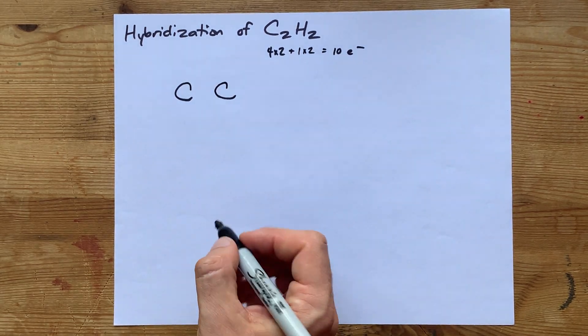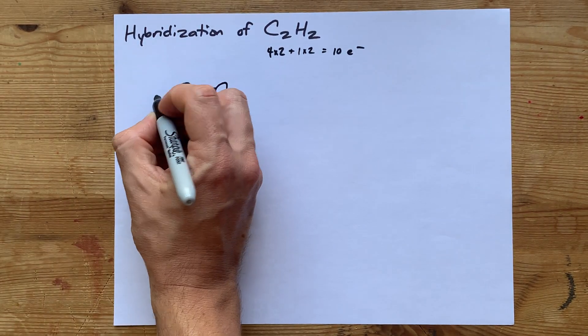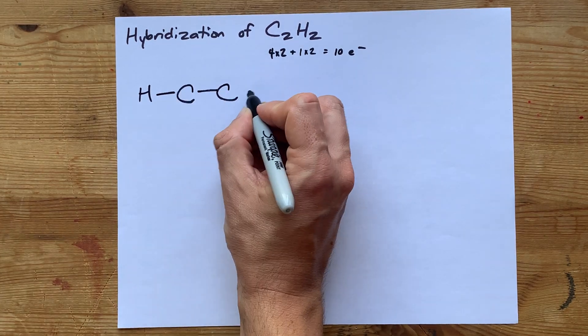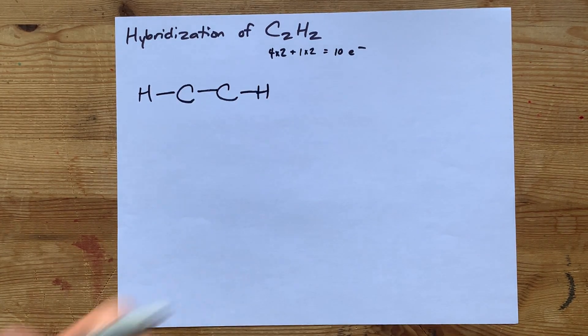Let's draw the two carbons, give them a single bond to start, and then let's also bond those to hydrogen. Great.